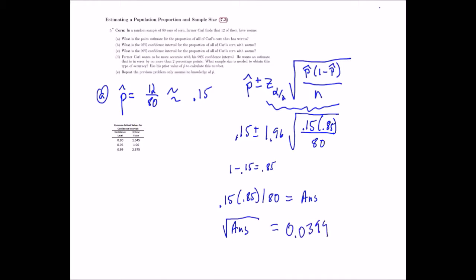That's just this part of the formula. Now I'm going to multiply that by the z-score to get the margin of error. So 1.96 times that answer will be my margin of error, which gives me 0.0782.